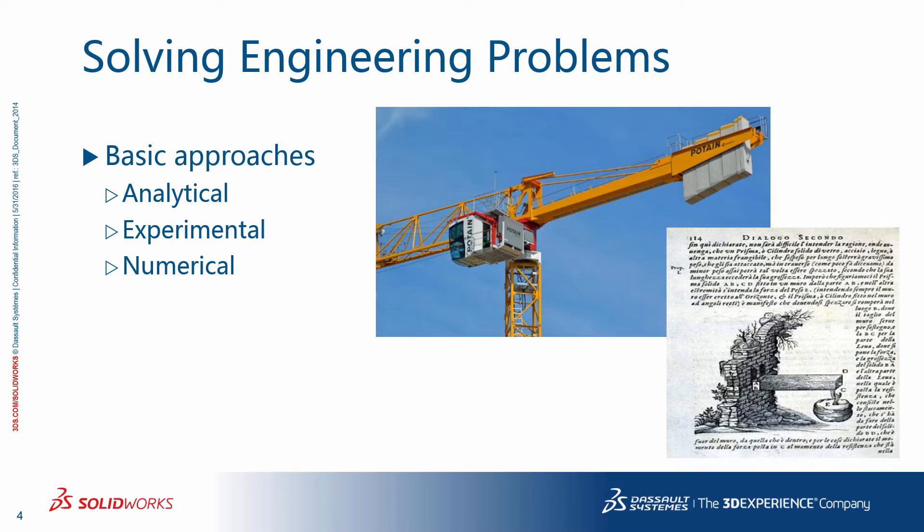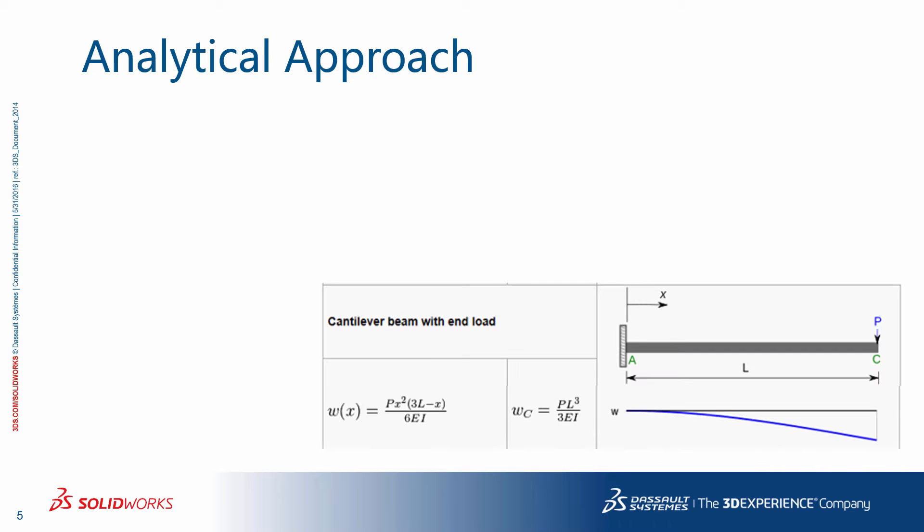When it comes to solving engineering problems, you can think of three basic approaches: analytical, experimental, and numerical. Let's think of a simple cantilever beam on the bending. This goes back a few centuries to the times of Leonardo da Vinci and Galileo. An analytical approach makes an assumption, in the case here, the so-called beam theory, and solves the problem directly.